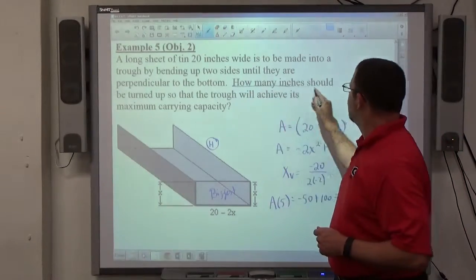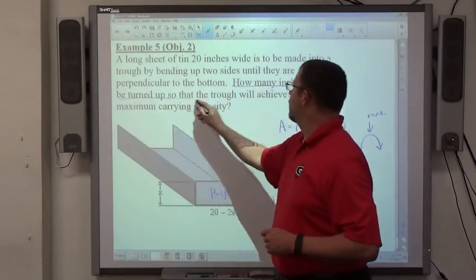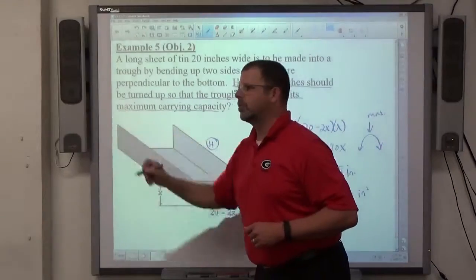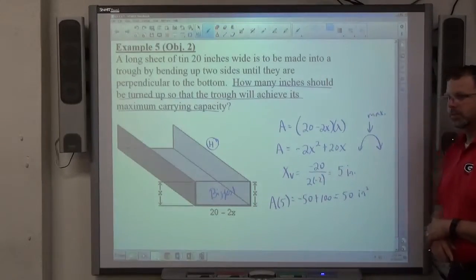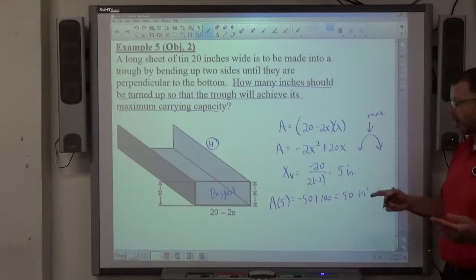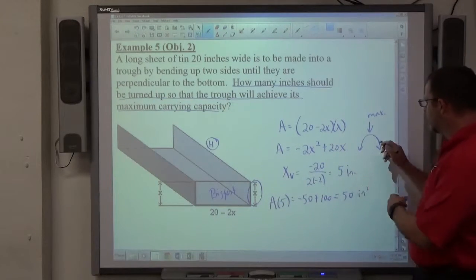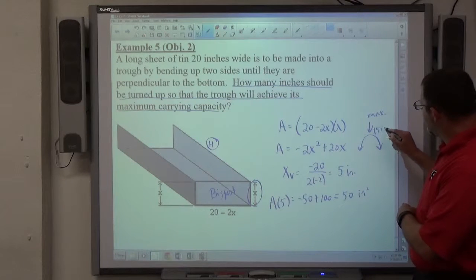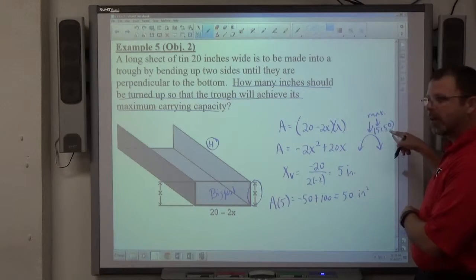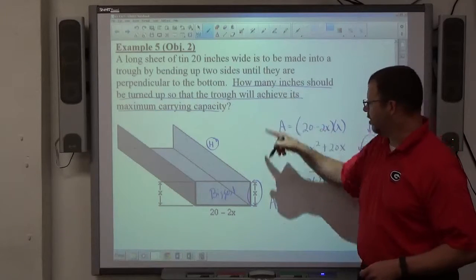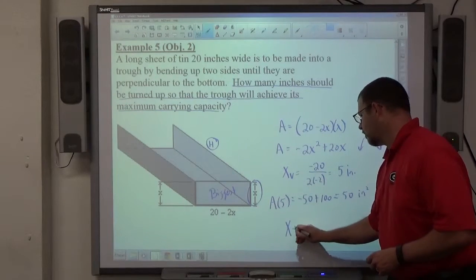The question says, how many inches should be turned up so that the trough will achieve its maximum capacity. So are they looking for x or A? They're looking for x. How much should be turned up is x, right? So we actually have the answer right here. Where the vertex occurs, which is 5, 50, this x attains the highest value here. So the answer they're looking for, how many inches needs to be turned up, is the x coordinate of my vertex, 5 inches.